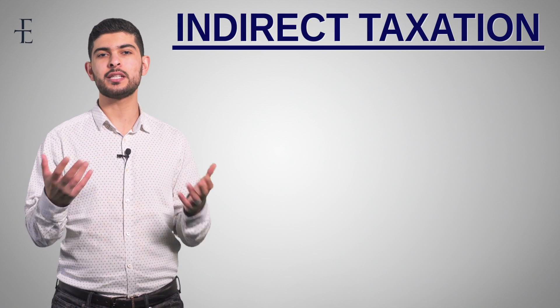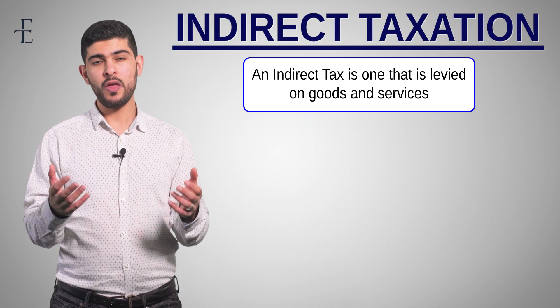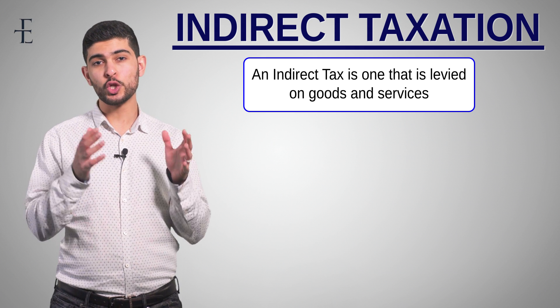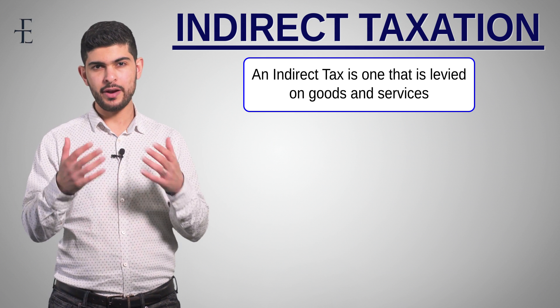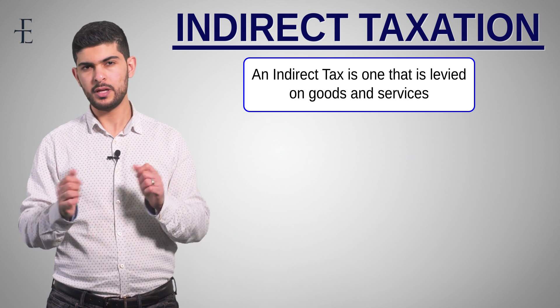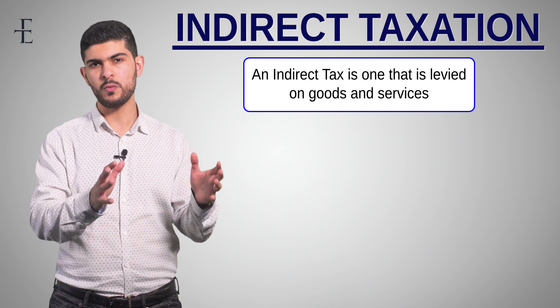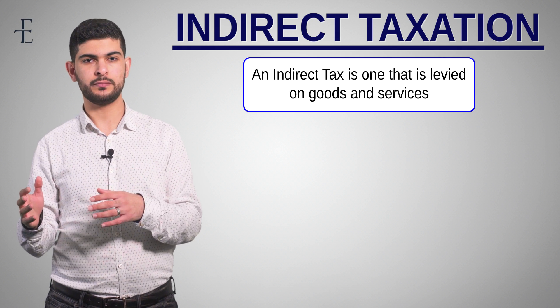Today we're going to deal with taxation, specifically indirect taxation. Let's start off with a definition of what indirect taxation is. An indirect tax is one that is levied on goods and services. In contrast, a direct tax comes straight out of your income. But we're not concerned about that for now because Theme 1, Micro, deals with indirect taxation.